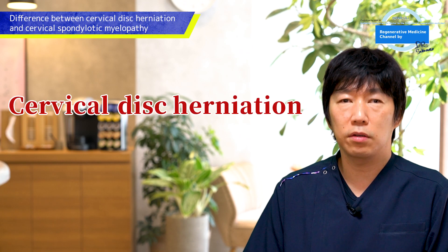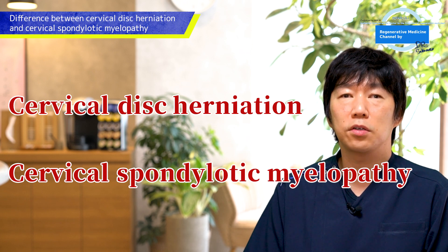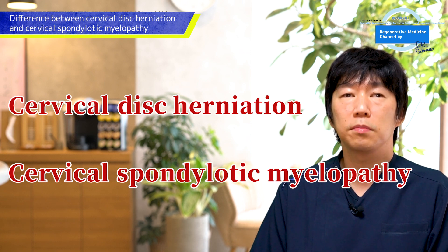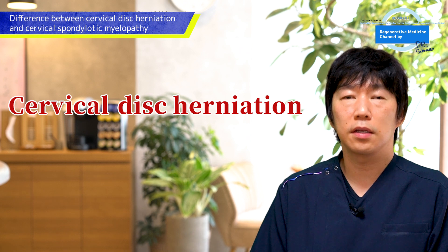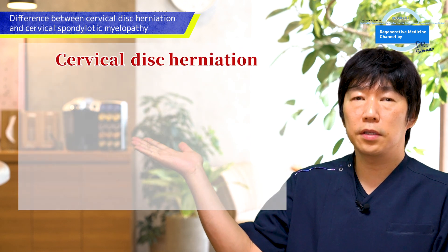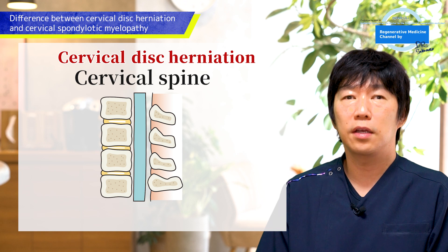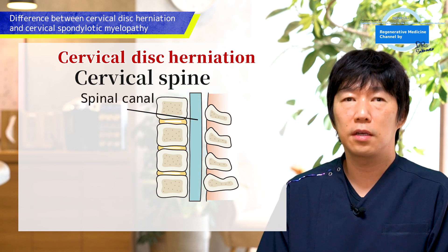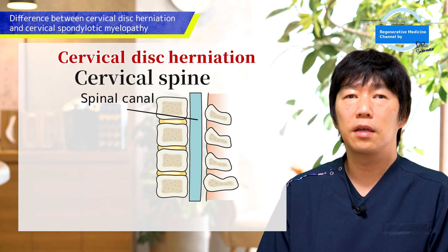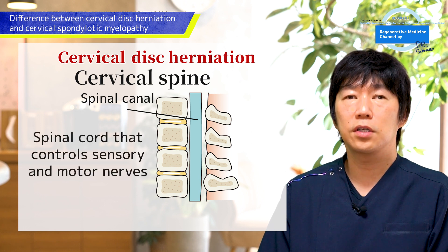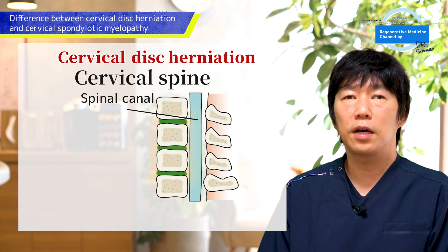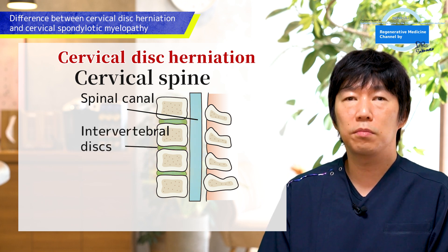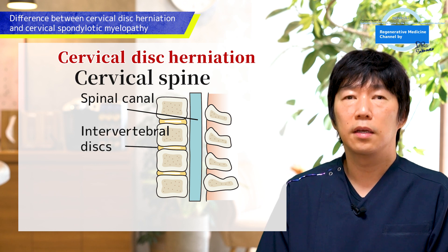Let's see cervical disc herniation and cervical spondylotic myelopathy. First, I'll explain about cervical disc herniation. Like this picture, a tunnel-like spinal canal runs along the back of the cervical spine. Inside of the canal, the spinal cord runs through and controls sensory and motor nerves from the brain. Intervertebral discs between the cervical vertebrae serve as a cushion.